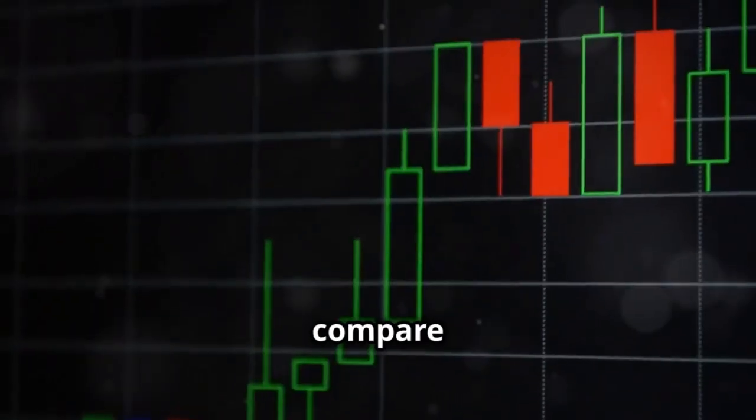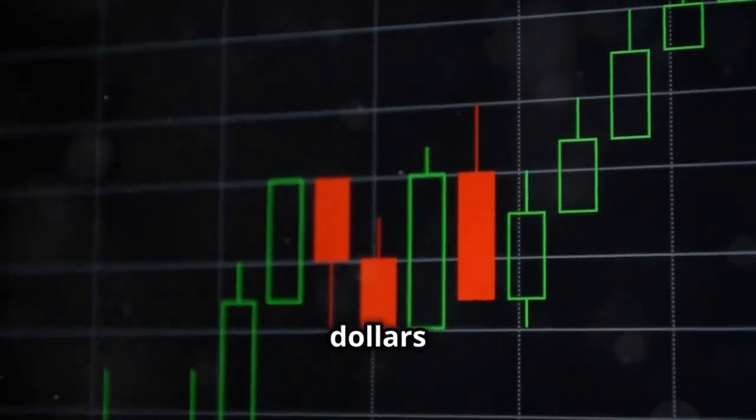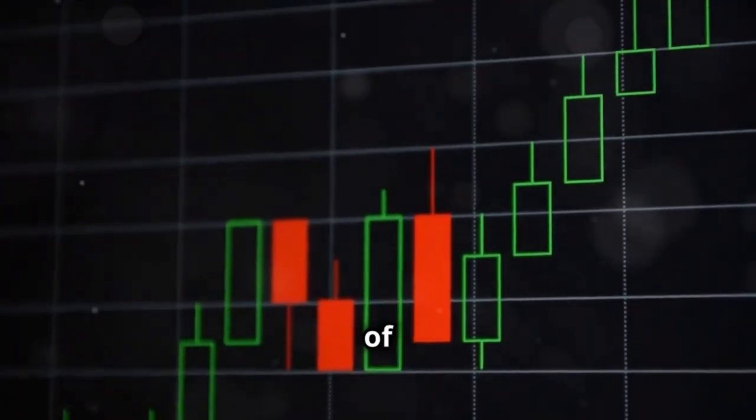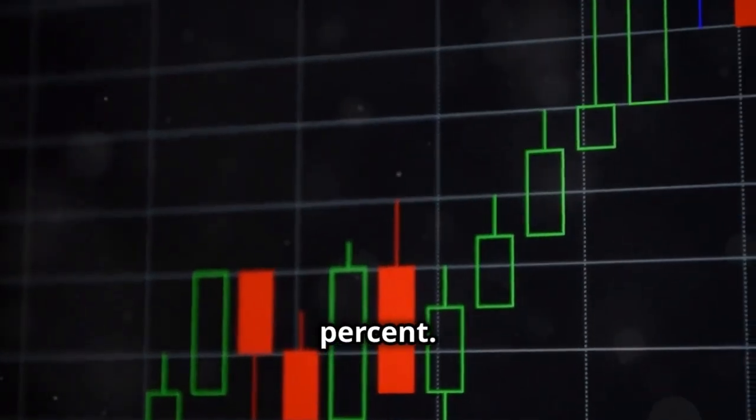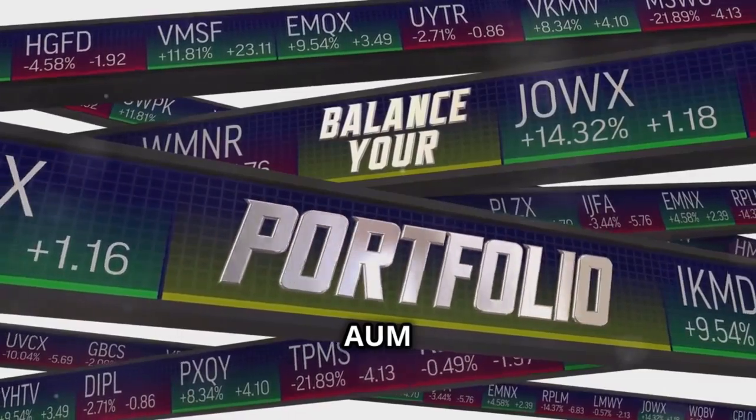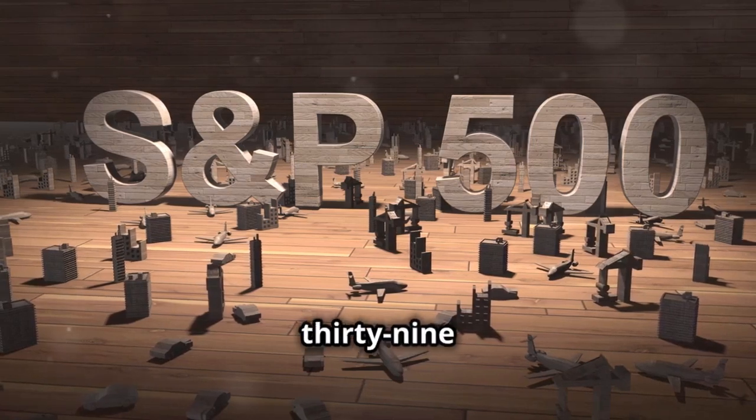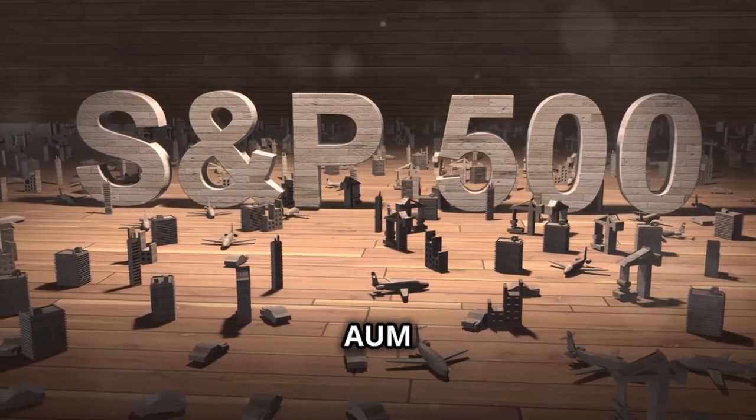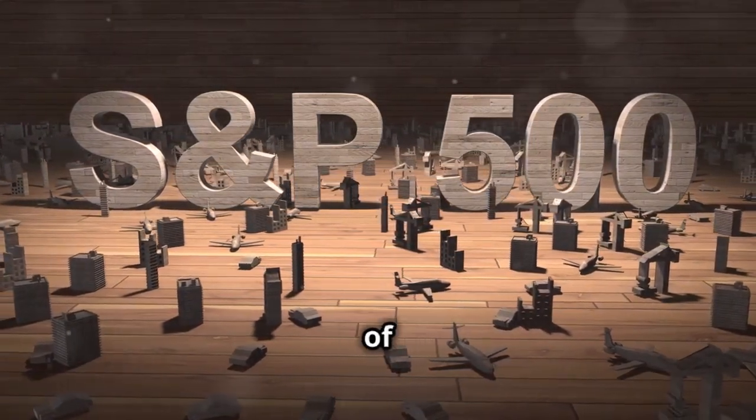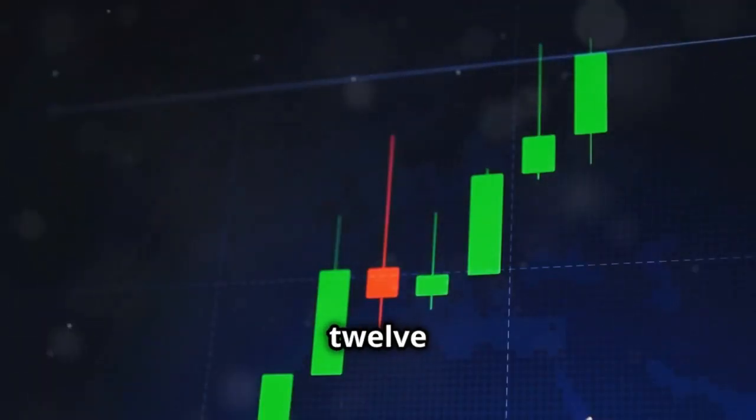VOO is not alone in the ETF market. Let's compare it with some key competitors. SPY with $526.85 billion AUM and an expense ratio of 0.09%. IWB holding $36.45 billion AUM and an expense ratio of 0.15%. SPLG, smaller at $39.40 billion AUM, but with the lowest expense ratio of 0.02%.